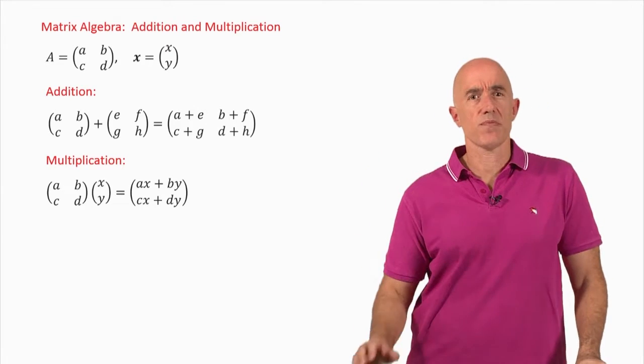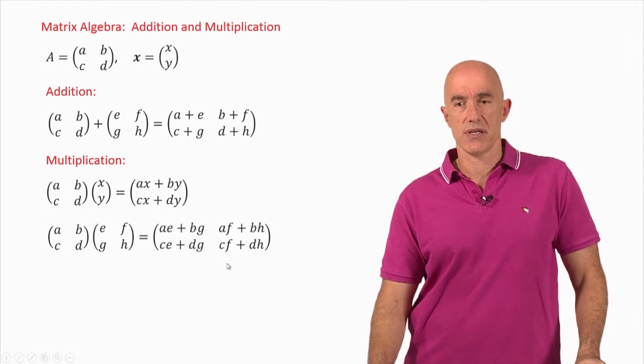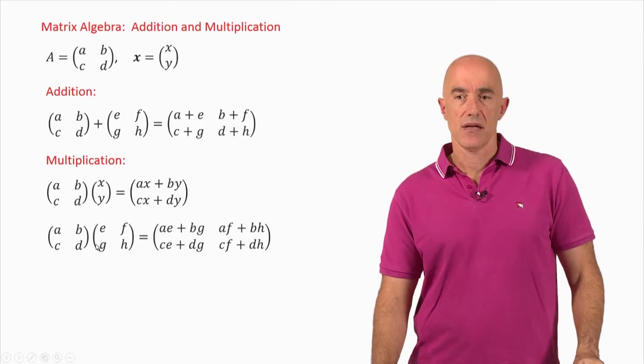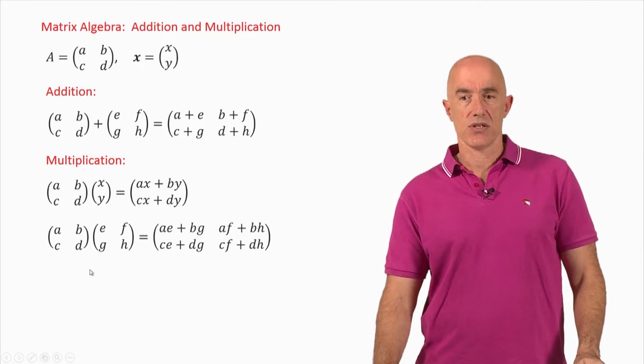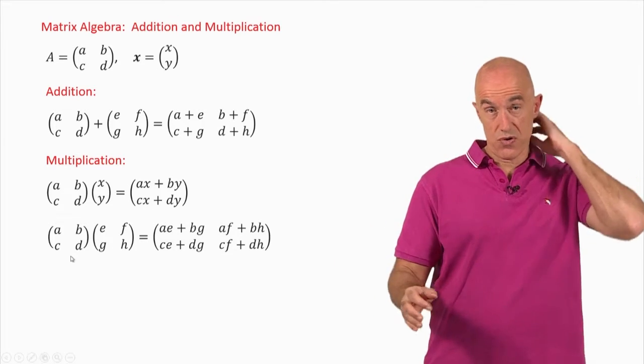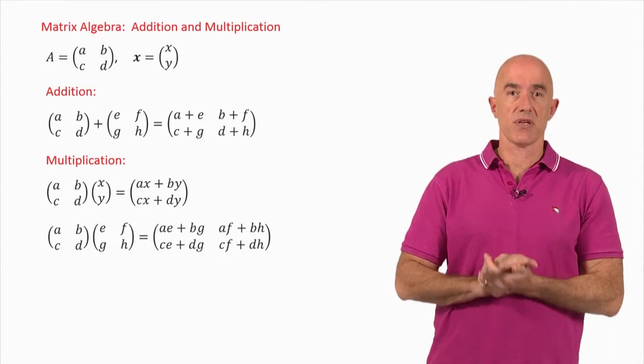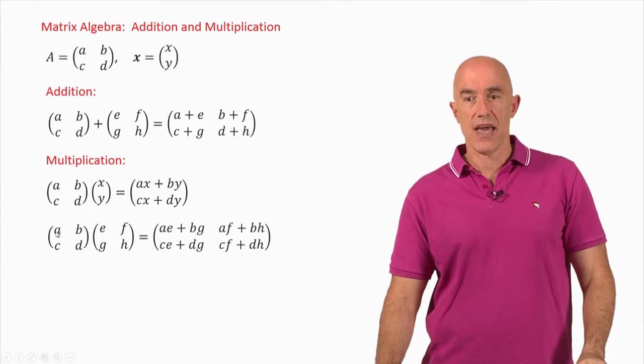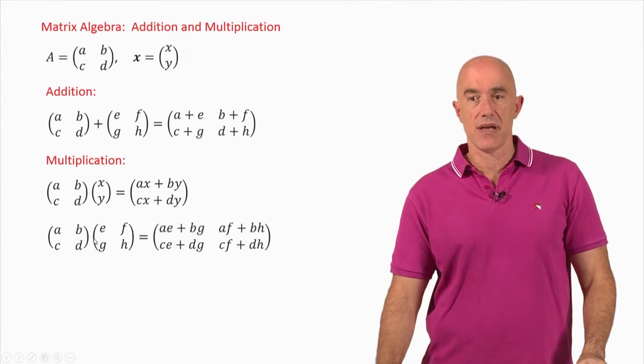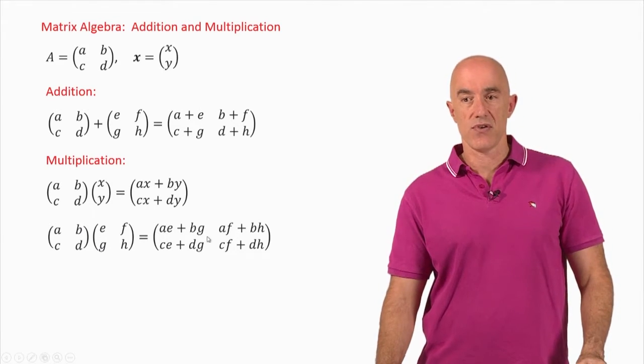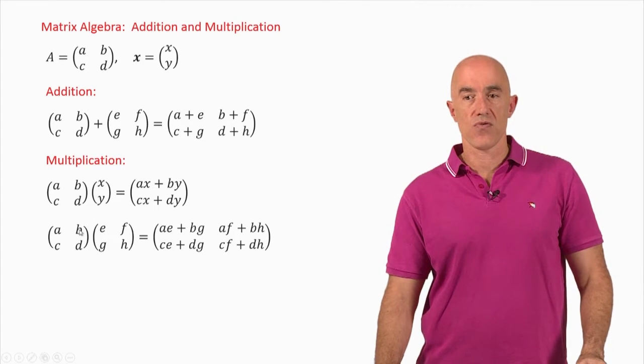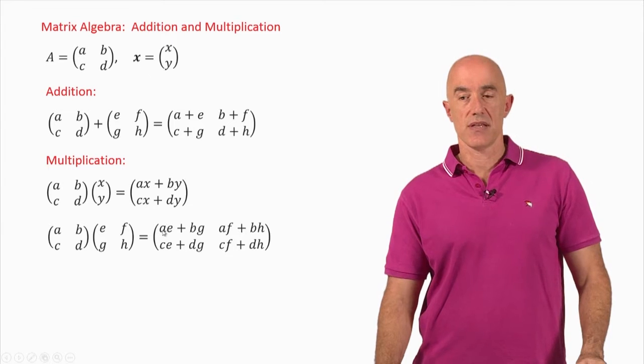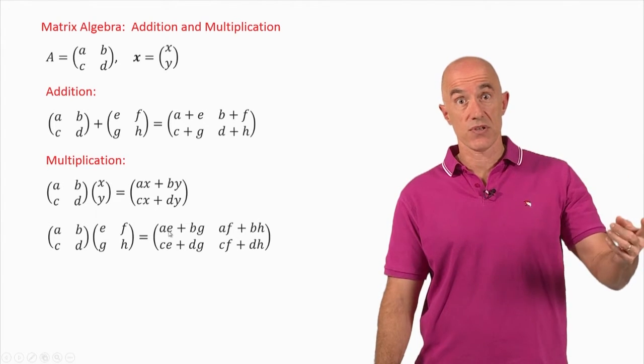What if we multiply two 2 by 2 matrices? So we're multiplying A, B, C, D times E, F, G, H. Well, we always go across the rows of the first matrix and down the columns of the second matrix. So we have A times E plus B times G, and that gives us the first element here. So the first row multiplied against the first column gives us the first row and first column.